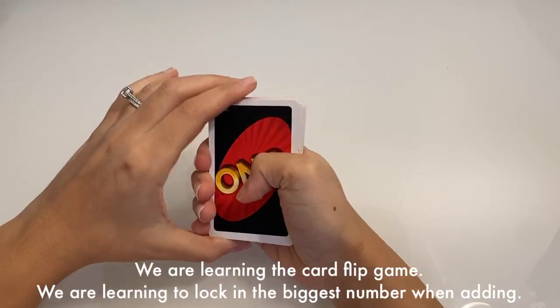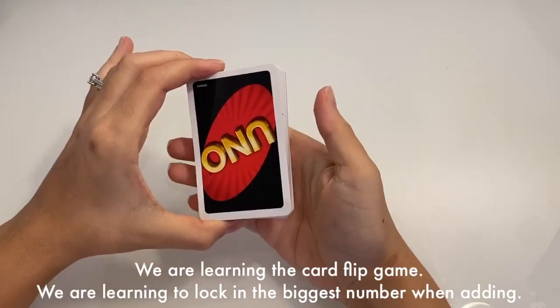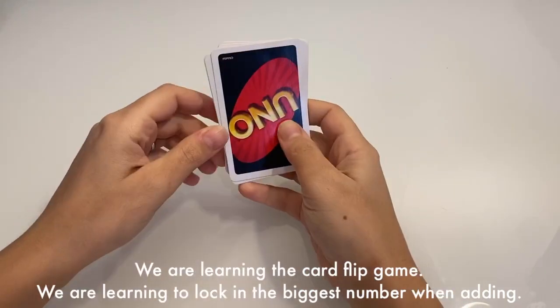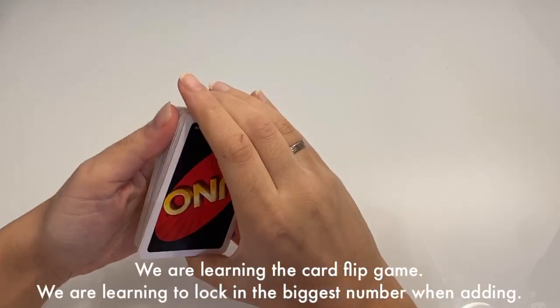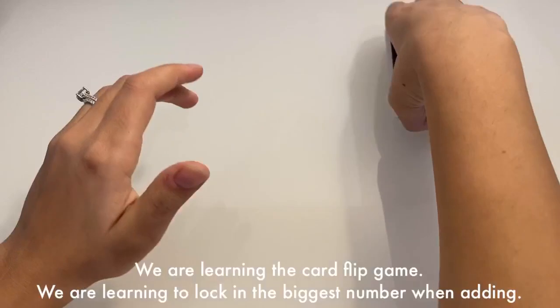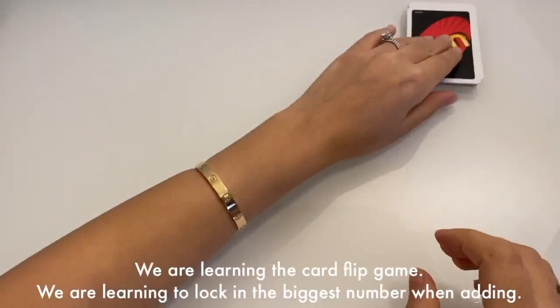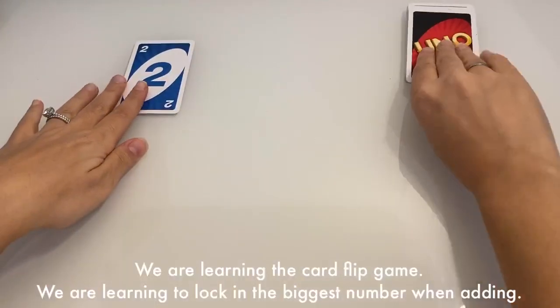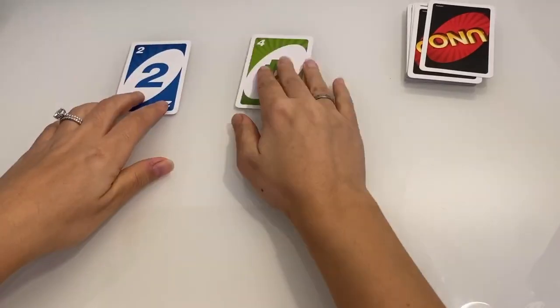Today we are going to play a game called Card Flip Edition. To play this game you need a deck of cards or a dice if you've got a dice at home, or even some UNO cards. What you need to do is quite simple: you just flip two cards, two and four, and we're going to make a number sentence with these two cards.